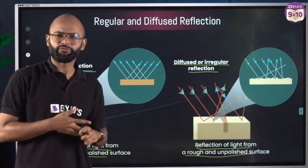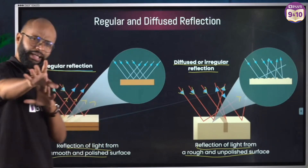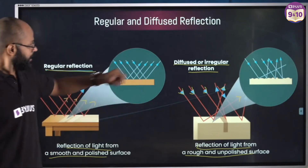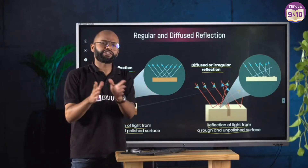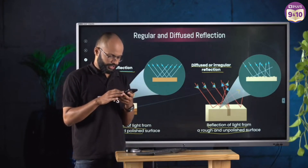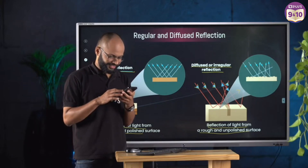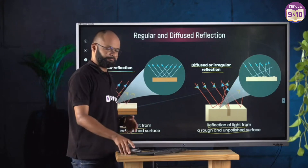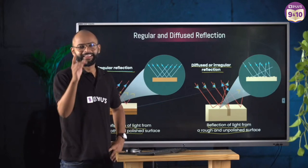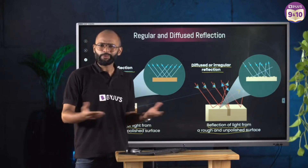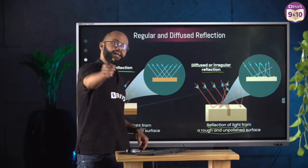Are the laws of reflection followed in diffused reflection? Regular reflection is fine — the laws of reflection are being followed. But do you think the laws of reflection are followed in diffused reflection too? Janvi says yes, Siripin says no. The answer is yes. The reason I ask challenging questions is so that learning feels meaningful — the answer is yes.